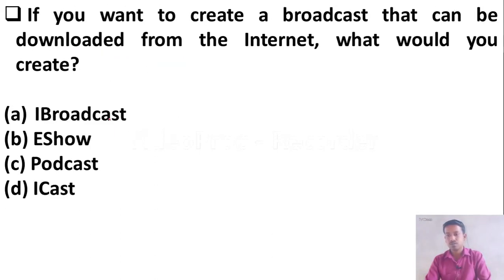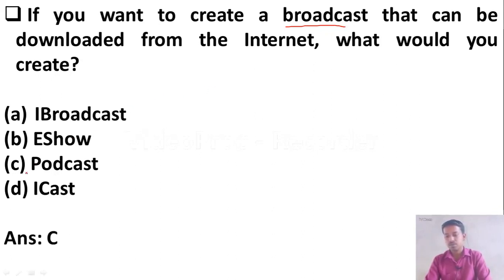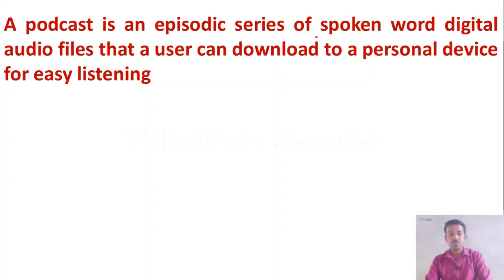If you want to create a broadcast that can be downloaded from the internet, what would you create? Option A: iBroadcast, Option B: eShow, Option C: Podcast, Option D: iCast. The right answer is Option C, Podcast. A podcast is a series of spoken word or digital audio files that a user can download to their personal device.